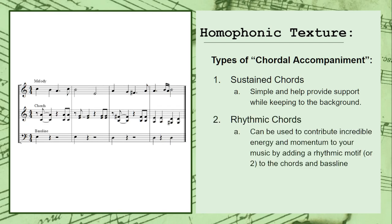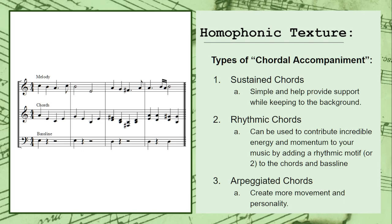You can also use rhythmic chords, which add a rhythmic element to your harmonic accompaniment, and can be used to contribute incredible energy and momentum to your music. You can make it even more interesting by using different rhythmic ideas for your chords and bass line respectively. You can even use arpeggiated chords, which use simple arpeggios to create more movement and personality in your harmonies. This can be done with a single line, or doubled up to create a more chordal-type sound.